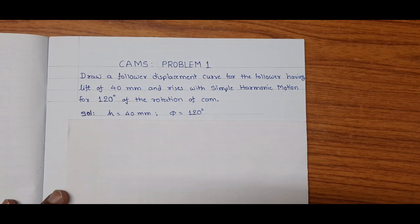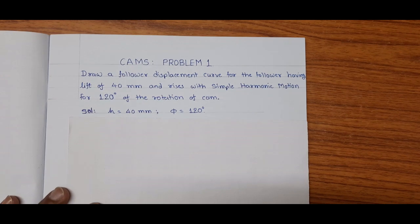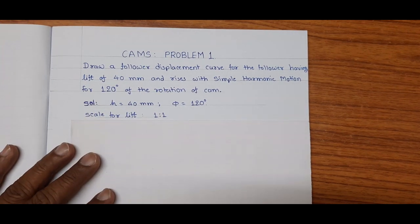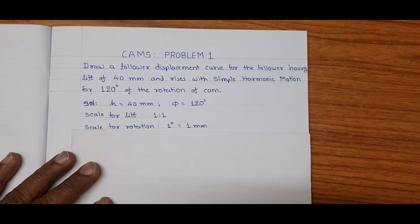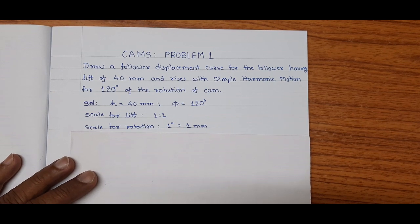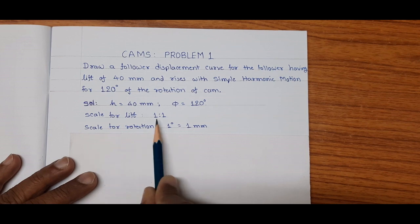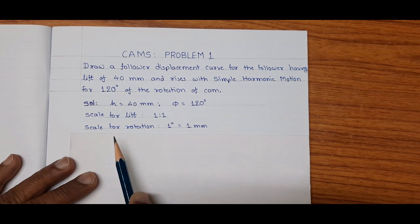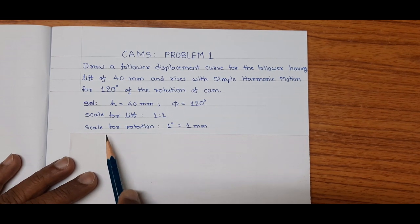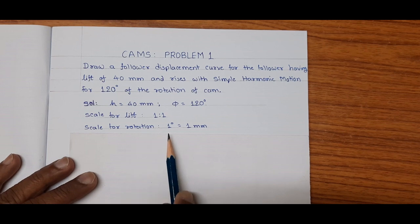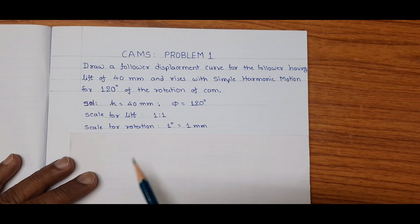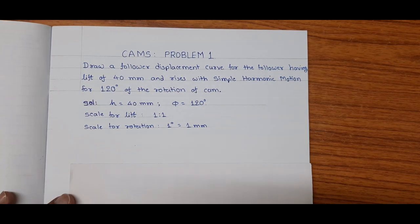Let us take some scale for drawing the displacement curve. So let us take the scale for the lift as 1:1, and for rotation we take the scale 1 degree of rotation equal to 1 mm.